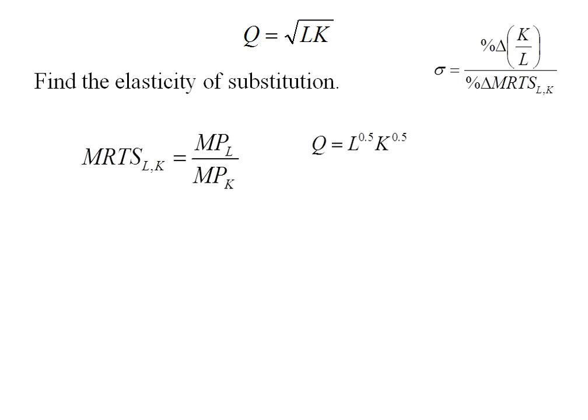So from my original production function, which I've just converted to L to the 0.5, K to the 0.5 to get rid of that radical sign, I can take the MPL and the MPK. It's Cobb-Douglas, you know it's going to simplify nicely, and my marginal rate of technical substitution is K over L.